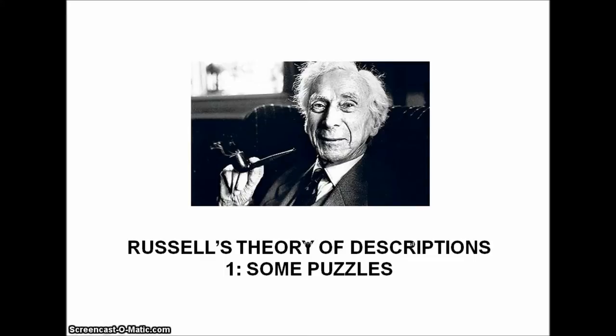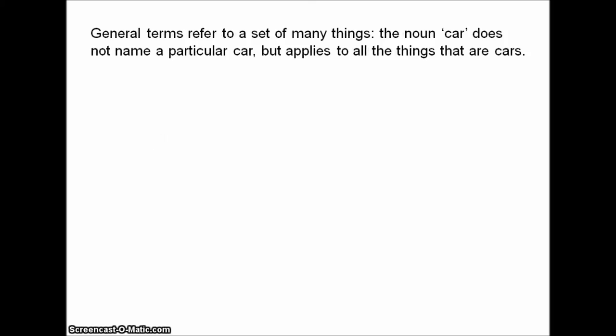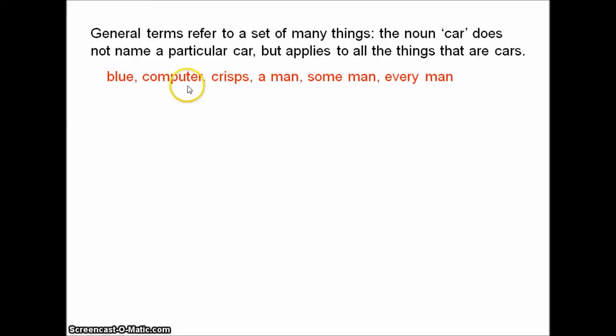We need to begin with some background. When we think about expressions that refer to things in the world, we can generally class them into two types: general terms and singular terms. General terms are terms that refer to many things. So the noun 'car', for example, doesn't name a particular car, but it seems to apply to all the things that are cars. Similarly, 'blue' applies to all blue things. 'Computer' doesn't name a particular computer — it refers to all computers. 'A man' doesn't pick out a particular man, and so on.